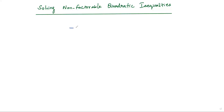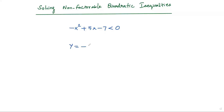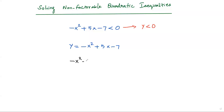Let's look at another example. Consider the quadratic inequality -x² + 5x - 7 < 0. This is a non-factorable quadratic expression. We write the corresponding quadratic function: y = -x² + 5x - 7. Since y equals this quadratic expression, we can write the inequality as y < 0. Now we find the zeros by plugging in y = 0, giving us -x² + 5x - 7 = 0.